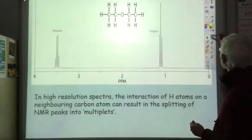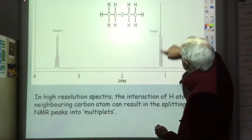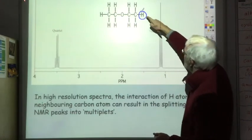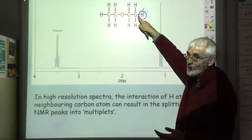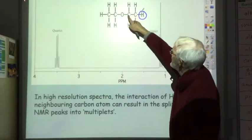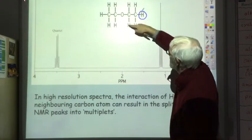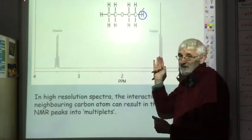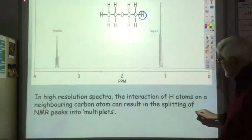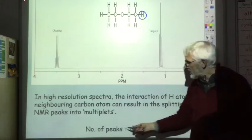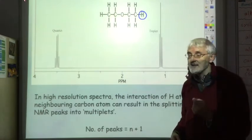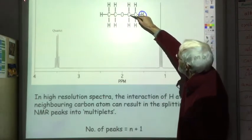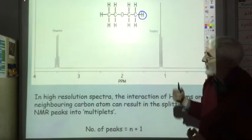If you look at one of the hydrogens responsible for this peak — pick any one of the six, they're all equivalent — we look not at the carbon it's attached to but its neighbouring carbon. That neighbouring carbon has two hydrogen atoms attached to it, so that's going to cause splitting. The basic rule is that the number of peaks you get is n+1, where n is the number of hydrogen atoms on the neighbouring carbon atom. So with two hydrogens on the neighbouring carbon, we get three peaks — a triplet.